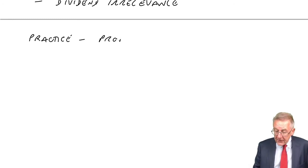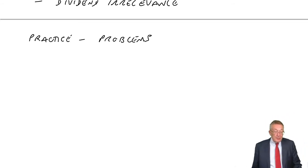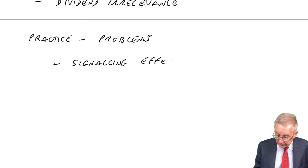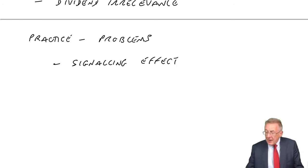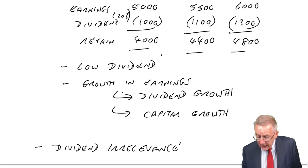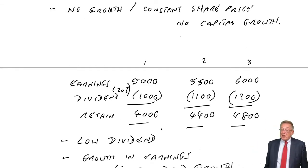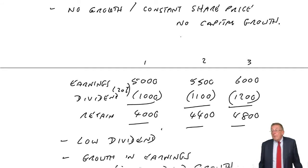Three problems with the idea of dividend irrelevancy. The first one is something called the signalling effect. This really relates to what happens if a company changes its dividend policy. Modigliani and Miller say it's irrelevant, so this year they might decide to pay a low dividend and retain; next year pay a high dividend and not retain; the year after, a low dividend and retain. It doesn't matter — year by year, do whatever you want.